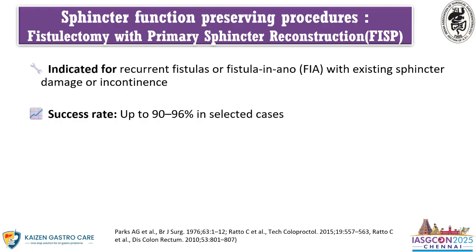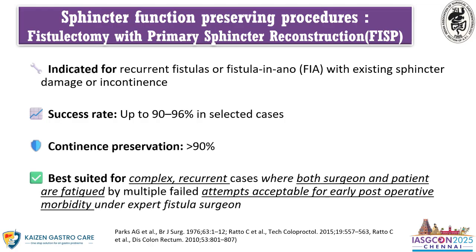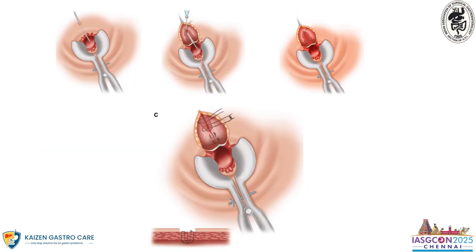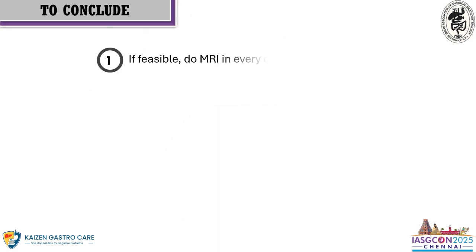PILTEK preserves the external sphincter, thus maximally preserving continence. However, it does carry a risk of recurrence as it is a sphincter-preserving procedure. For sphincter function-preserving procedure — total fistulectomy with primary sphincter repair — this is indicated for recurrent fistula even in the presence of pre-existing sphincter damage or incontinence. The success rate is 90 to 96% and continence preservation is more than 90%. It is best suited for complex recurrent cases where both the surgeon and patient are frustrated with multiple attempts, and should be done under a fistula expert when prior sphincter-preserving attempts have failed.